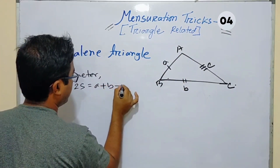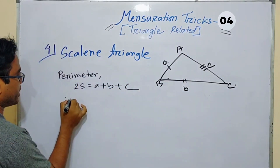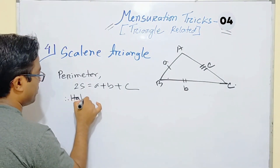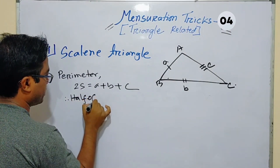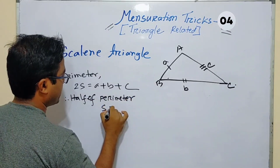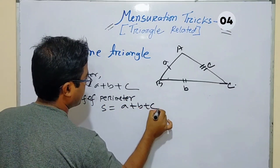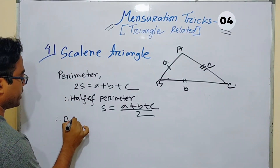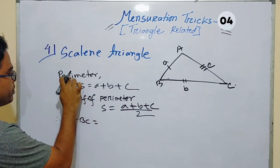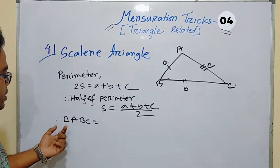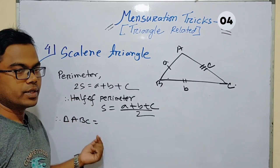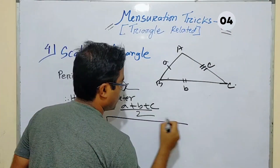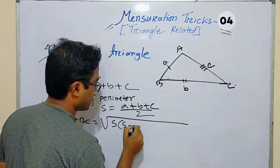The perimeter is generated by 2s, which is the sum of three sides: a plus b plus c. Therefore, s — meaning half of the perimeter — equals a plus b plus c divided by 2. Therefore the area of triangle ABC equals the square root of s times s minus a times s minus b times s minus c.